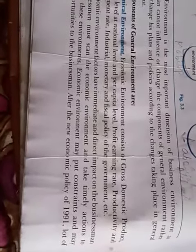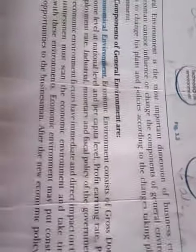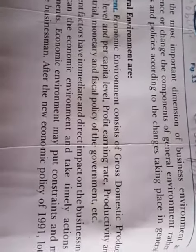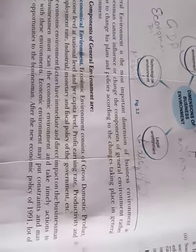This is a video on Business Studies Class 12, covering dimensions of business environment. The first dimension is economic environment. Economic environment consists of gross domestic product, income level at national and per capita level, profit earning rate, productivity, and employment rate, along with industrial, monetary, and fiscal policy of the government.